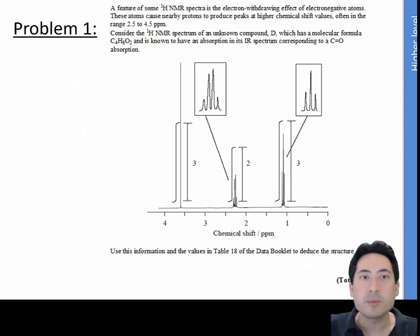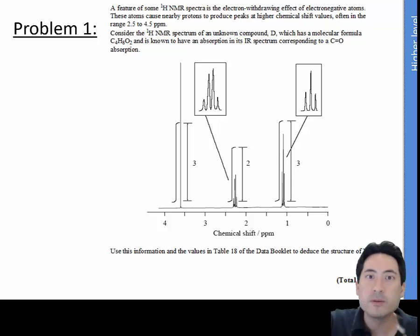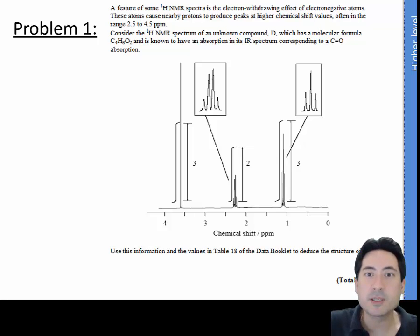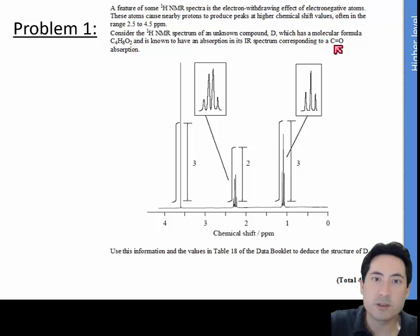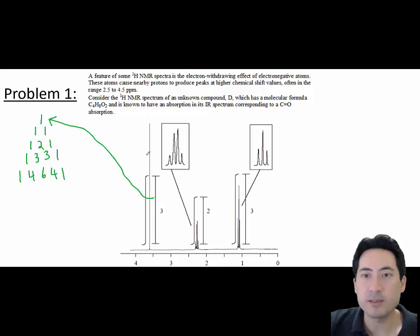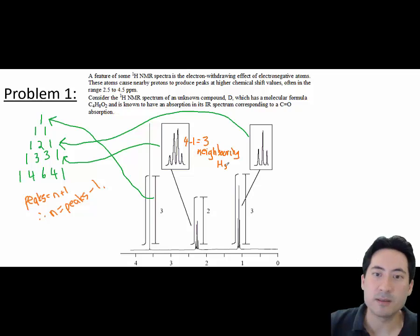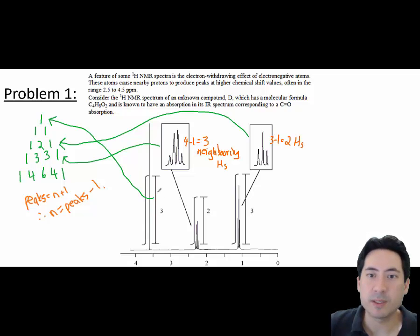Here's a problem: a feature of some proton NMR spectra is the electron-withdrawing effect of electronegative atoms, which cause nearby protons to produce peaks at higher chemical shift values, often in the range of 2.5 to 4.5 ppm. Consider the spectrum of compound D — C4H8O2 — which has a C=O bond. The integration tells us how many hydrogens there are for each peak, and using Pascal's triangle we can match up the patterns to confirm the number of hydrogens.